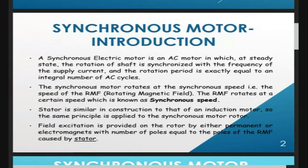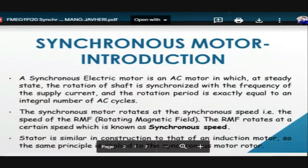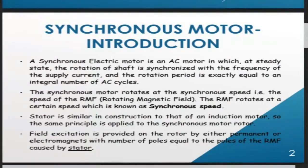The rotating magnetic field is revolving, and the rotor circuit is excited with a DC supply. Because DC supply has the same polarity, the magnetic field created is constant. This constant rotor magnetic field results in attraction and repulsion between the rotating stator magnetic field and the constant rotor magnetic field.